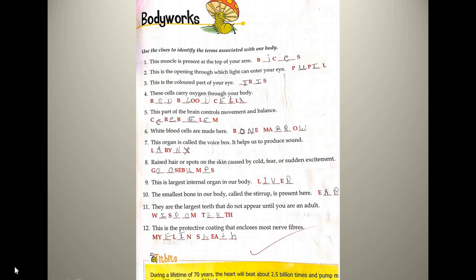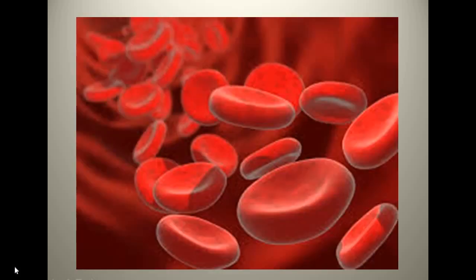The next is: this is the coloured part of the eye — that colourful part is iris. The next question: these cells carry oxygen through your body. These cells which carry oxygen through your body are known as red blood cells. You can see that they are red in colour — red blood cells.